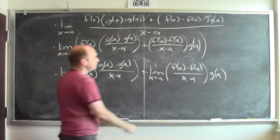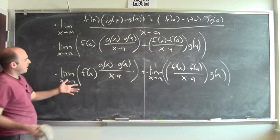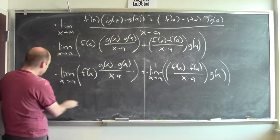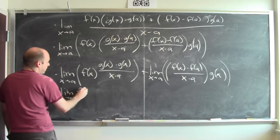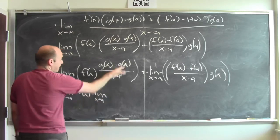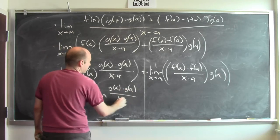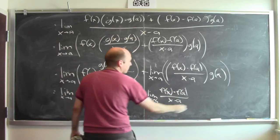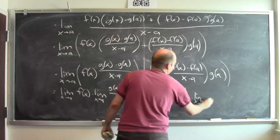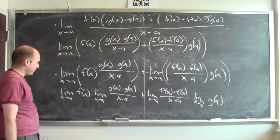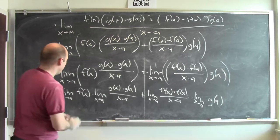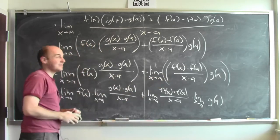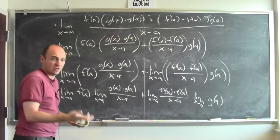Now how do I calculate these limits? They're both limits of products, and the limit of a product is the product of the limits, provided the limits exist. So this becomes the limit as x goes to a of f of x, times the limit as x goes to a of that fraction, plus the limit of the other fraction times the limit of g of a. Now I've got four limits to do, but they're going to be easy to calculate at this point, and all four exist.